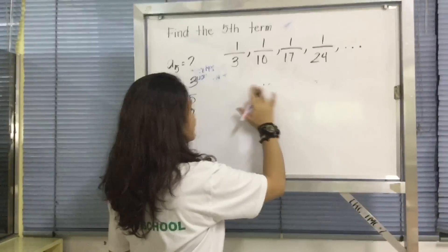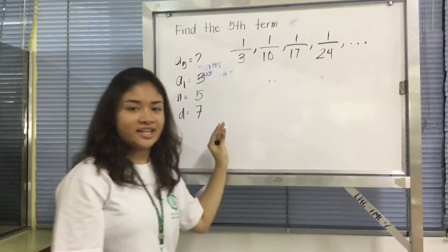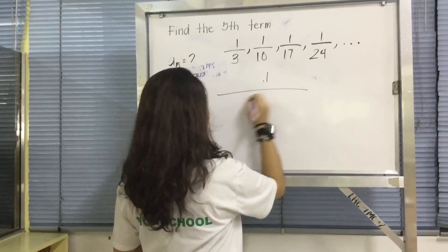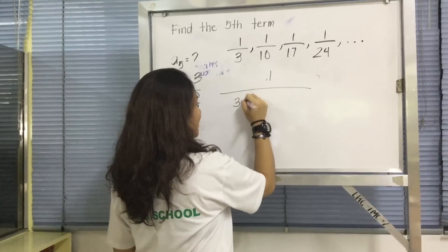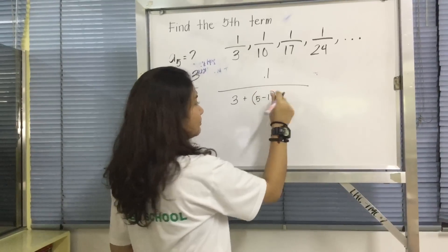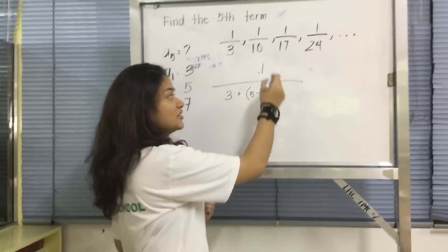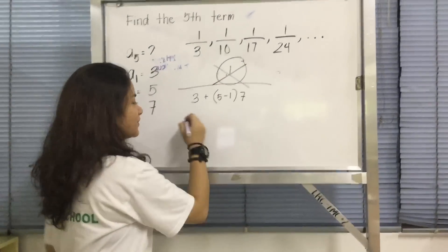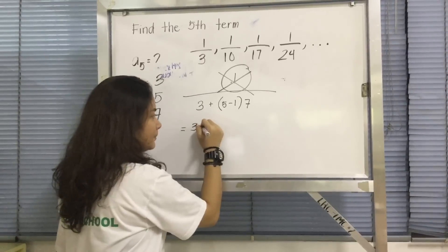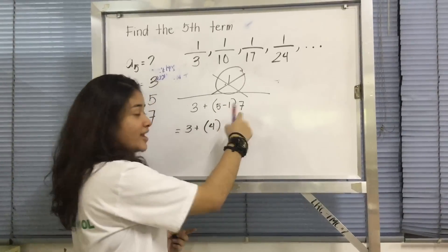Now that we have the difference, the nth term, and a1, we are going to plug it in to the formula. So the formula is 1 over 3 plus the nth term 5 minus 1 multiplied by the difference which is 7. Again, disregard the numerator. So it is going to be equal to 3 plus 5 minus 1 is 4 multiplied by the difference which is 7.